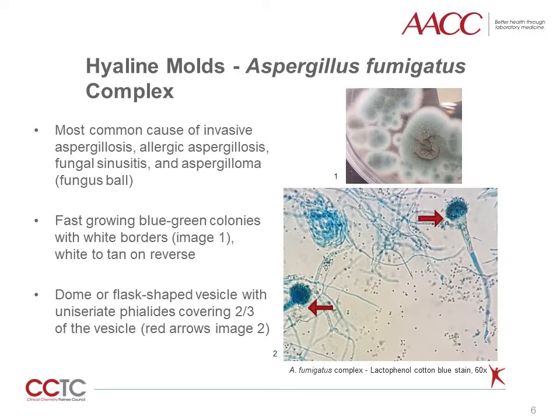Several species form part of the Aspergillus fumigatus complex, with Aspergillus fumigatus as the major human pathogen within the complex. It is the main cause of invasive aspergillosis, allergic aspergillosis, and fungal sinusitis. It grows fast, forming blue-green to gray colonies with white borders, as seen in image one; the reverse is white to tan. Microscopically, the conidiophore ends with a dome or flask-shaped vesicle, with uniseriate phialides covering two-thirds of the vesicle, as pointed out by the arrows in image two.